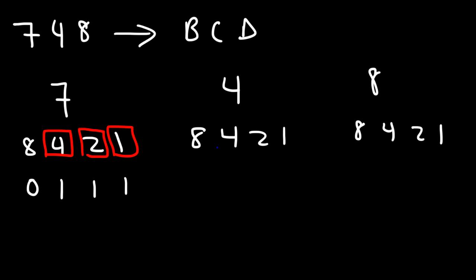Now to get 4, we only need to use 4. So we just replace 4 with a 1; everything else will have a 0. So 4 as a 4-bit binary number is 0100.